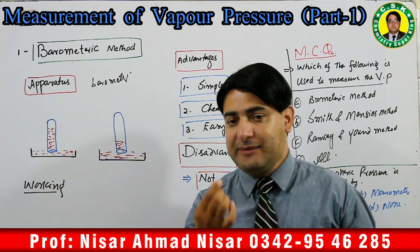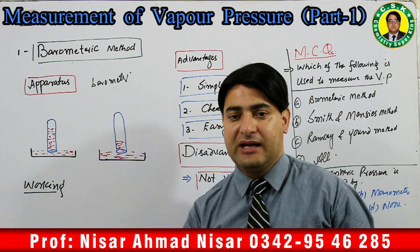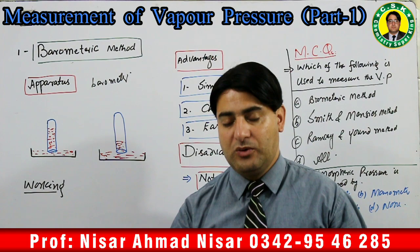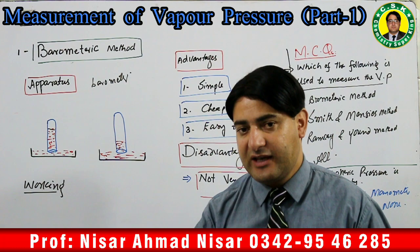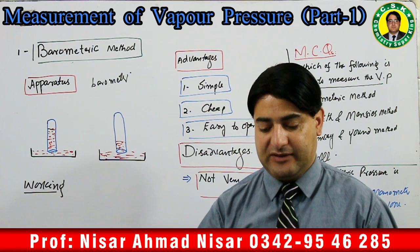Mercury ki dish mein ek tube ko invert karte hain. Jab tube ko mercury ki dish mein invert karte hain to mercury ka level tube ke andar neeche aata hai, aur tube mein mercury ke level ke upar empty space ban jaati hai.